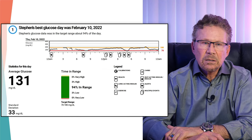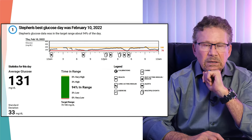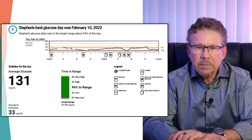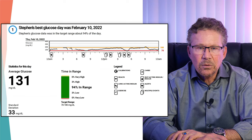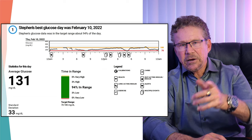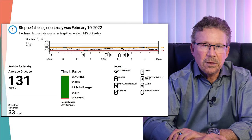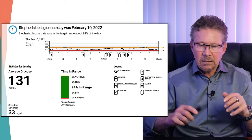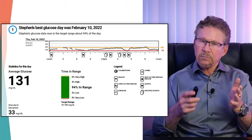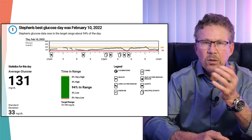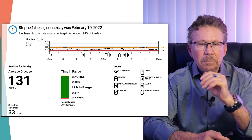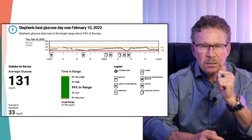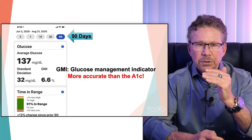This is the same patient — Stephen — and I like to look at the best day. The Dexcom download will give you the best day. His time in range is over 94%, very little lows, mean glucose of 131, and standard deviation of 33. So I know he can do it. I like the positive reinforcement — I ask him what he was doing on that day, so whatever you're doing, you might think of some tips and tricks that help keep your blood sugars in control.